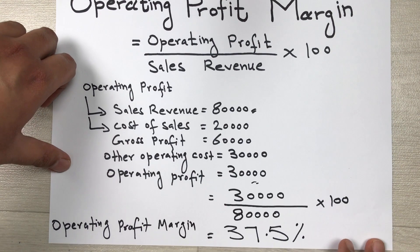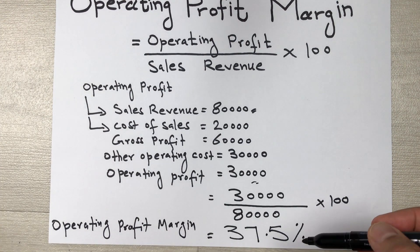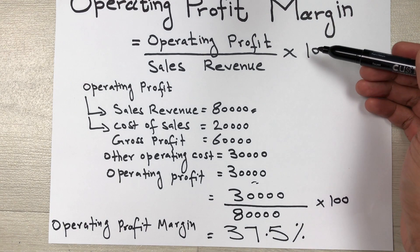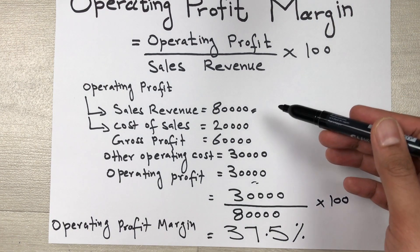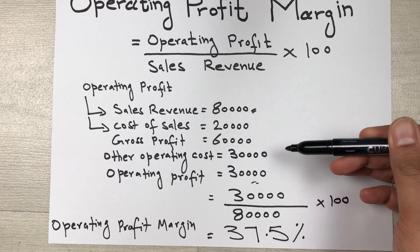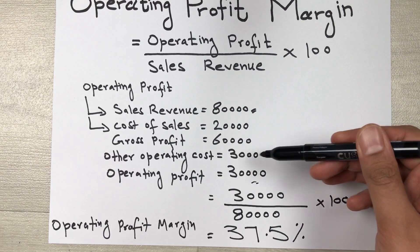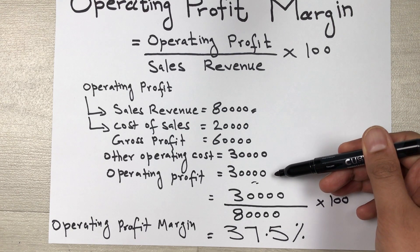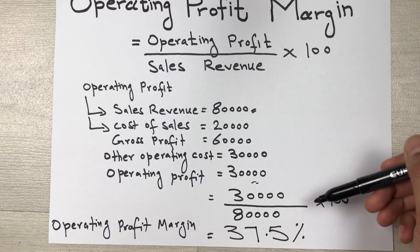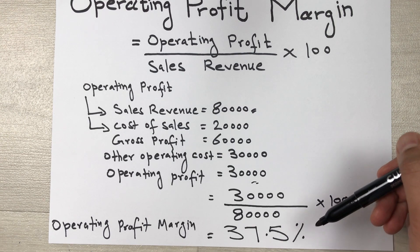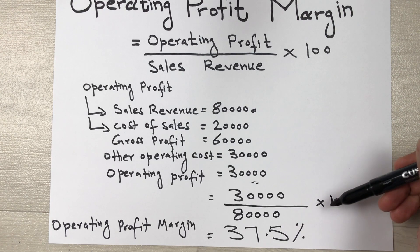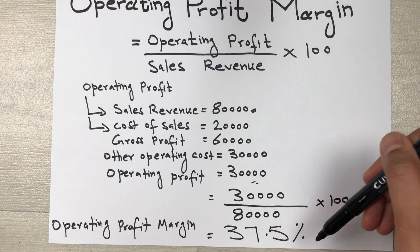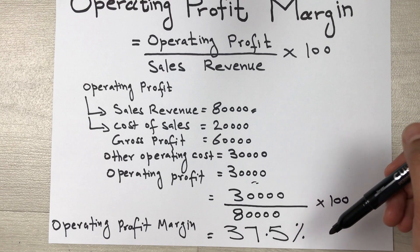This is how you can calculate the operating profit margin — you just have to remember the formula. First find out the gross profit, then subtract it with other operating costs to get your operating profit. Then put the values into the formula and here is your final answer in percentage form: 37.5% is our operating profit margin.